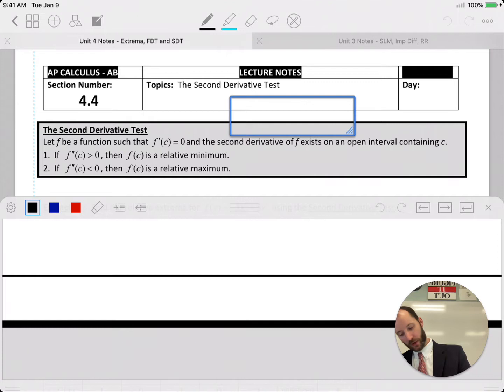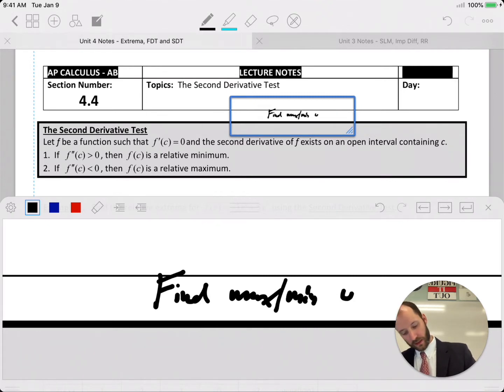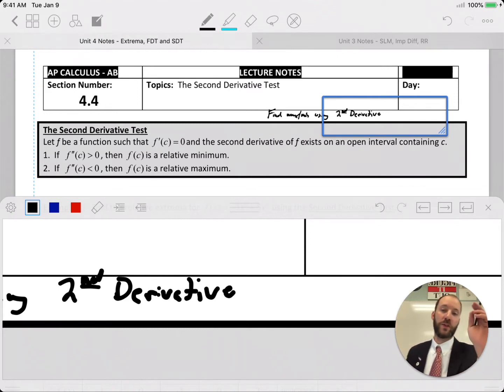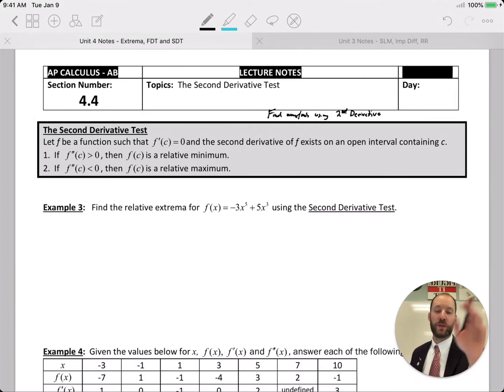So we are going to find maximums and minimums using the second derivative. Looking for the same information but using the second derivative as a test for that information.